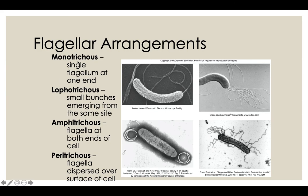The first flagella arrangement is called monotrichous — 'mono' meaning one, 'trichous' meaning hair. So one hair, one flagella, coming out of one location on the organism. This particular bacteria species has one single flagella coming out of one end. If you see this under a microscope, it's classified as monotrichous. There are lots of species with monotrichous flagella, and knowing this helps narrow down the species.